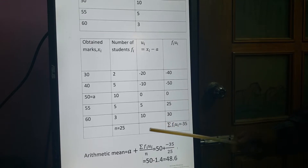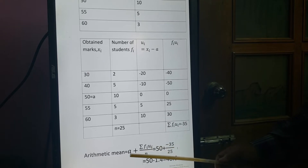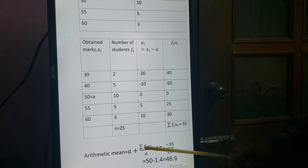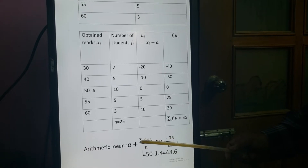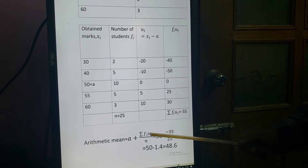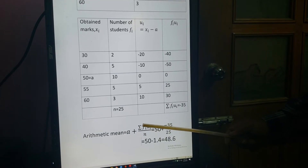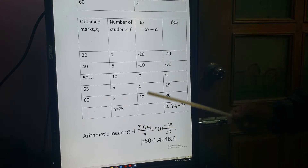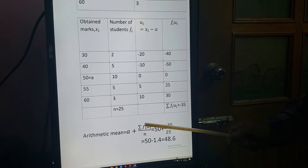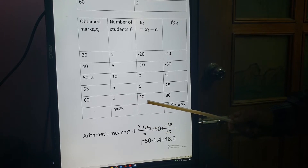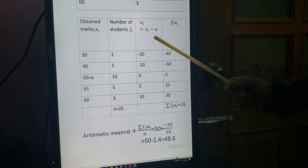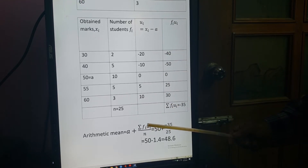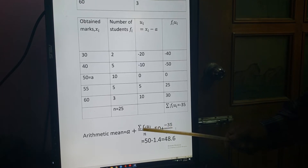Now put values in the formula: mean = A + summation FIUI divided by N. The only addition compared to the previous formula is FI, because frequencies are given in this problem. That is why the formula changes slightly: A + summation FIUI / N.